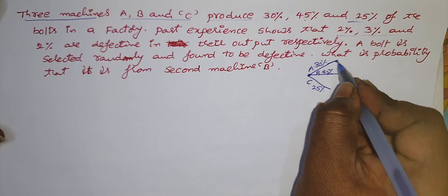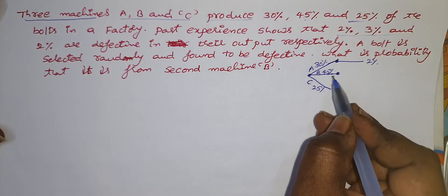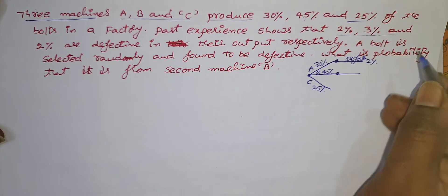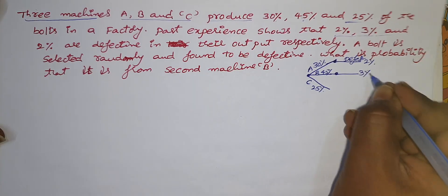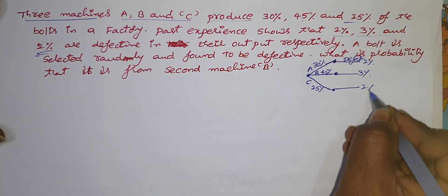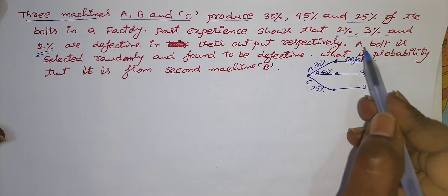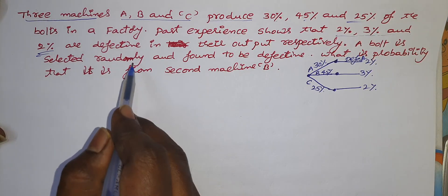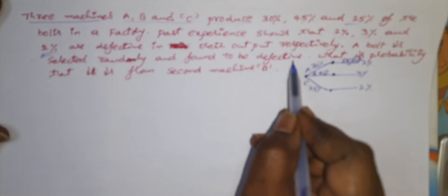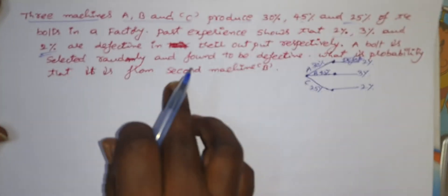So, out of 30%, 2% are defective from machine A. From the entire production of machine B, the defective percentage is 3%. From the production of machine C, 2% is the defective percentage. Now, a bolt is selected randomly — blindly a bolt is selected from the entire factory and found to be defective. What is the probability that it is from the second machine B?